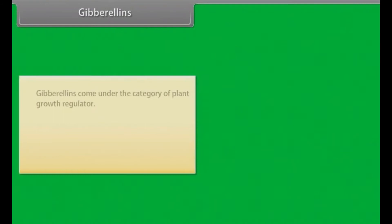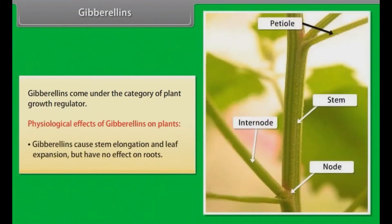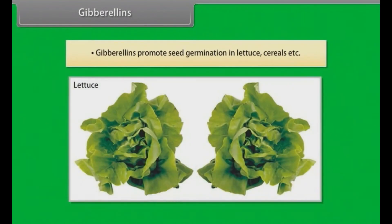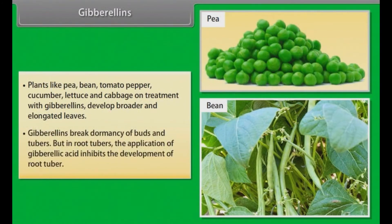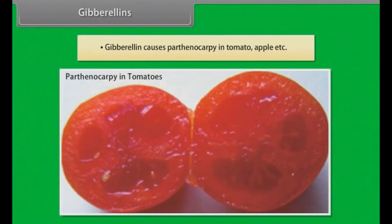Gibberellins. Gibberellins come under the category of plant growth regulator. Physiological effects of gibberellins on plants: Gibberellins cause stem elongation and leaf expansion but have no effect on roots. Gibberellins promote seed germination in lettuce, cereals etc. Plants like pea, bean, tomato pepper, cucumber, lettuce and cabbage on treatment with gibberellins develop broader and elongated leaves. Gibberellins break dormancy of buds and tubers. But in root tubers, the application of gibberellic acid inhibits the development of root tuber. Gibberellins cause parthenocarpy in tomato, apple etc.